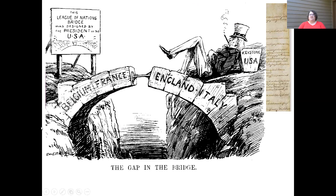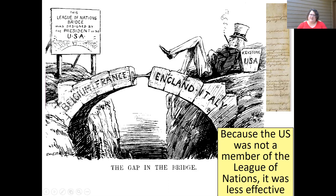This is a political cartoon published in a newspaper. If you look at the top, you can see the sign: 'This League of Nations bridge was designed by the President of the USA' — acknowledging this is part of Wilson's 14 Points. If you look at the bridge itself, you can see blocks labeled Belgium, France, England, Italy — all countries that signed on to the League of Nations — but there's a gap: the US. It's called the Keystone, and you can see the Uncle Sam figure leaning against it. The treaty will be weaker and the League of Nations less effective because the US didn't join. It was an American plan, and people saw the US as an instrumental force in having helped end the war.